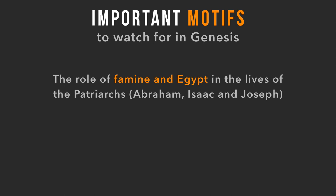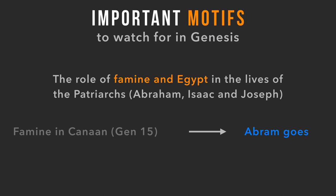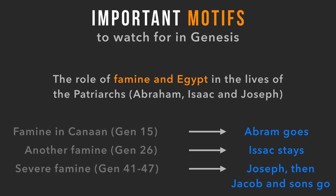There's one more motif we haven't talked about yet: the very important role that famine and Egypt play in the lives of the patriarchs — Abraham, Isaac, and Jacob. In Genesis 15, when Abram first comes into Canaan, there is a famine and he goes down to Egypt. There's another famine in Genesis 26, but Isaac is specifically told not to go to Egypt. Then there is a severe famine in Genesis 41 through 47.